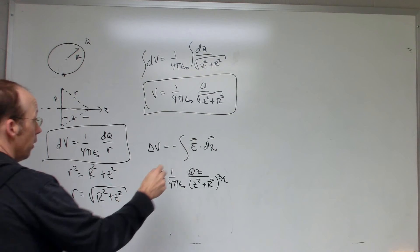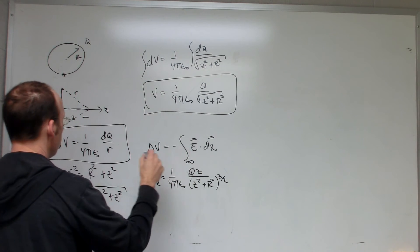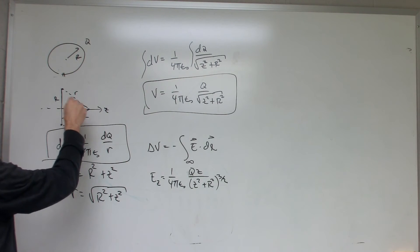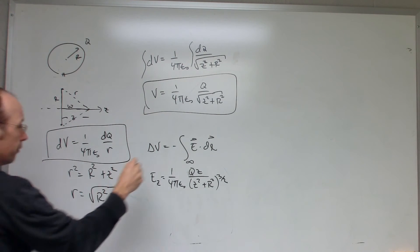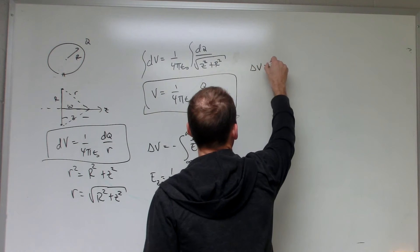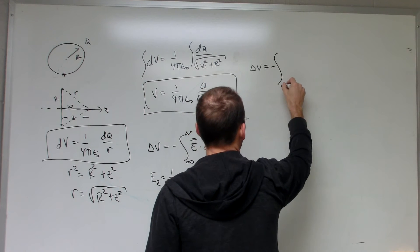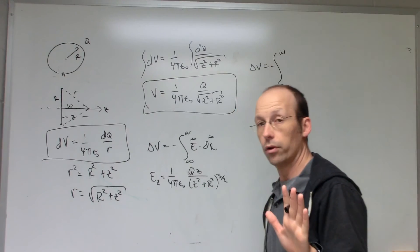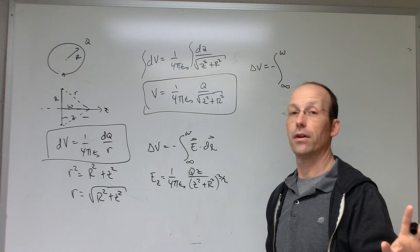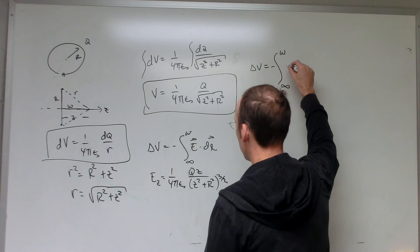If I integrate from infinity to, let's call this some other variable because I don't want to use z twice. Let's call this w. So we're going to integrate from here to there. And dl is going to be dz because we're just moving in the z direction. So this means I have delta V is going to be negative the integral from infinity to w. And I'll have to warn you, about half the time I make a sign error. So if I make a sign error, then just fix it later.